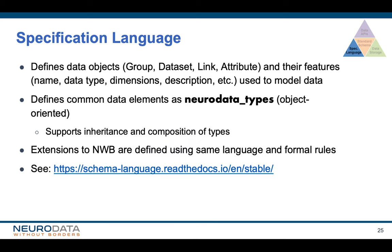First up is the specification language. It defines data objects — groups, datasets, links, attributes — and their associated features such as name, data type, dimension, and description. A core concept in the schema language is the idea of neurodata types. If you're familiar with object-oriented programming, think of a neurodata type as a class that defines a reusable data type that we can reuse through both inheritance as well as composition of types.